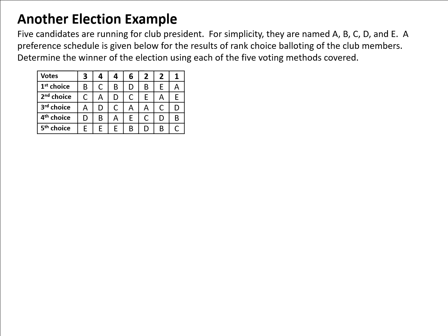Let's go over the details for this example. Five candidates are running for club president — we're calling those candidates A, B, C, D, and E. What I want to do is look at who the winner of the election will be with each of five voting methods. We're going to start with plurality.